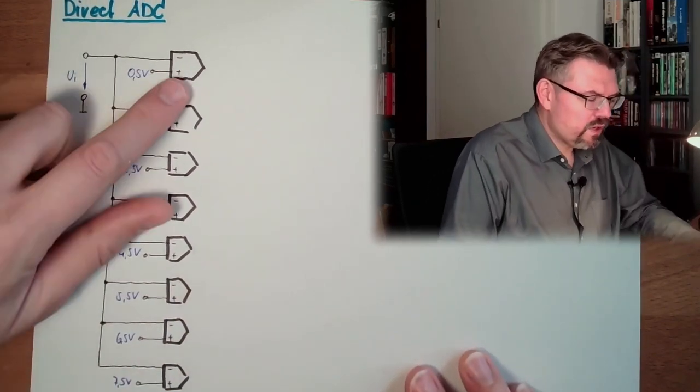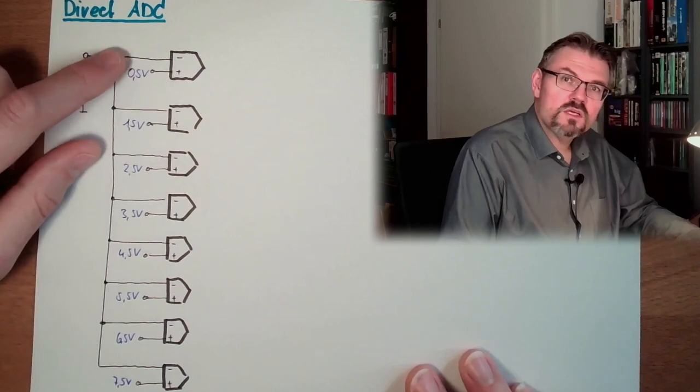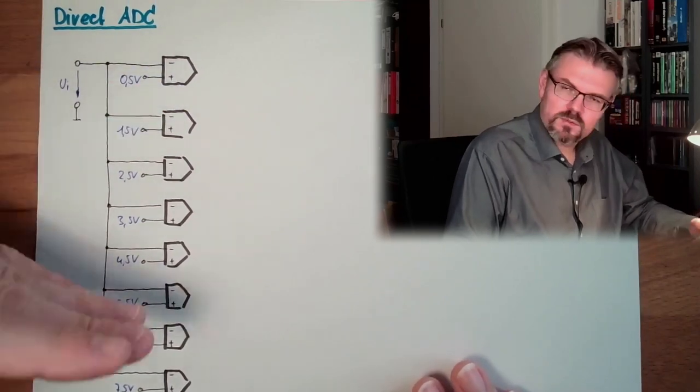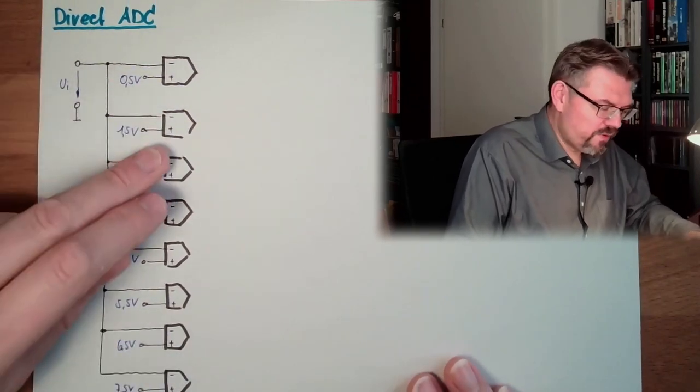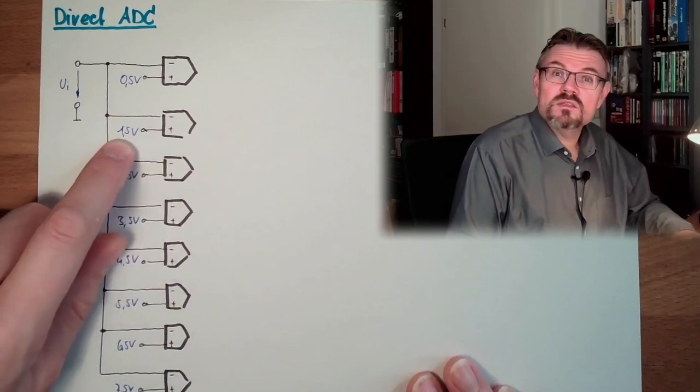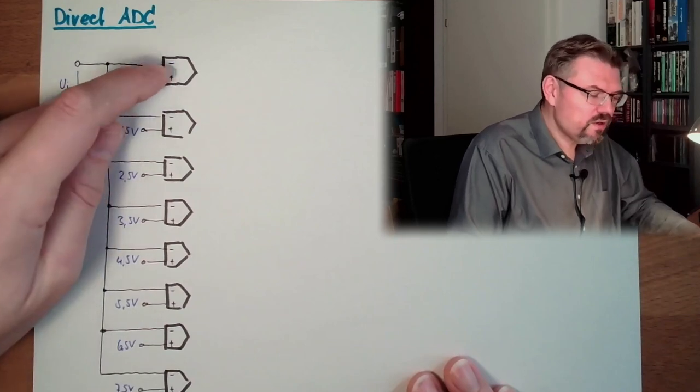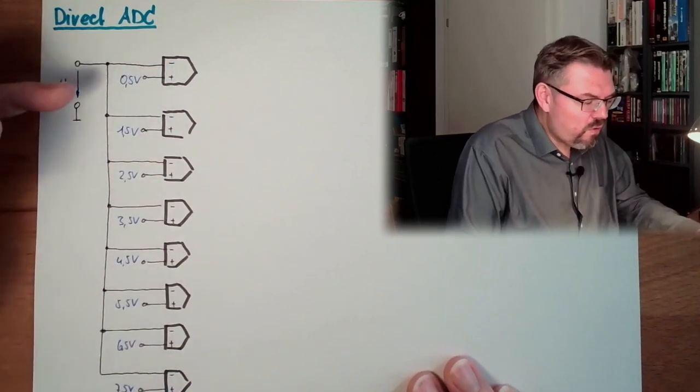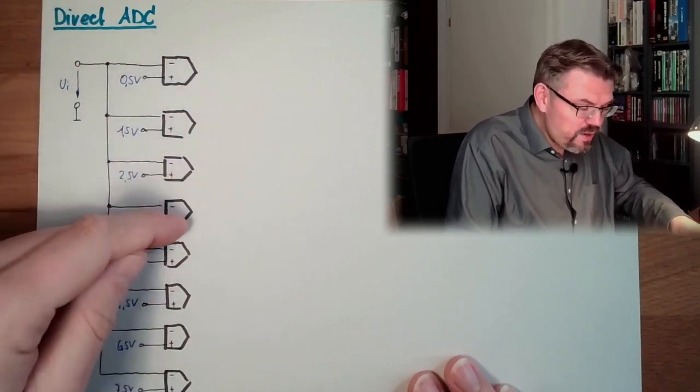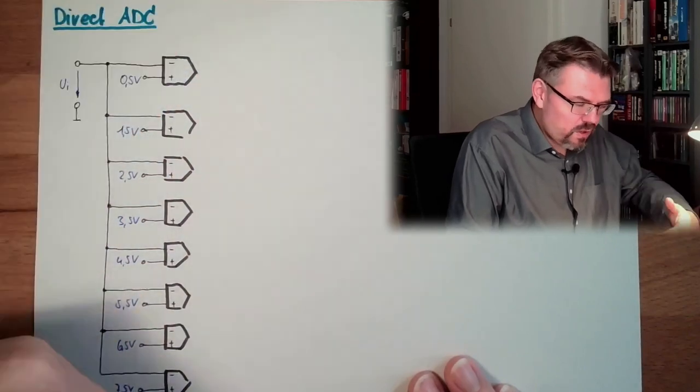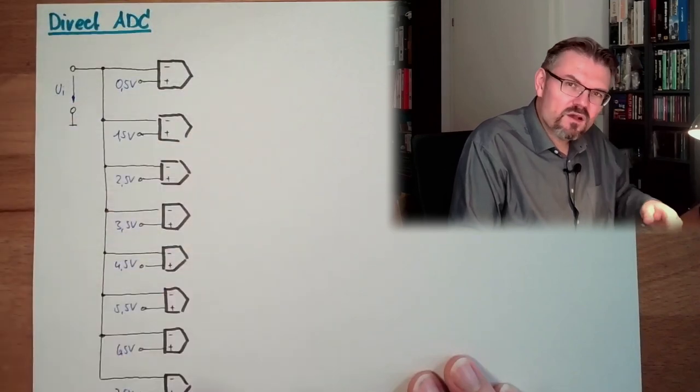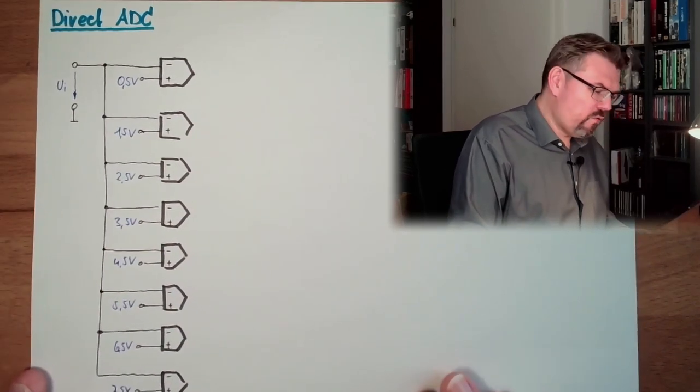So this comparator will put out 1, if the input voltage is above 0.5 volt. Then we will switch the first comparator, all others will stay 0. This comparator will then switch to 1, if the input voltage climbs above 1.5 volts. So then this is 1 and this is 1, all others are 0. And the more UI is rising, the more 1s we will see. So we will start with 0, then this is 1, then both are 1, then 3 are 1, then 4 are 1. So we will see a growing number of 1s.